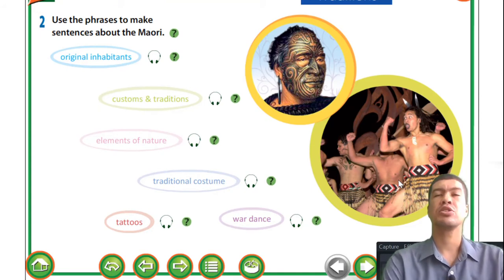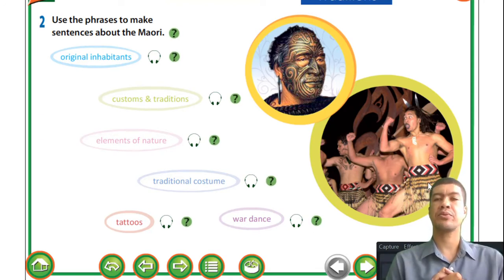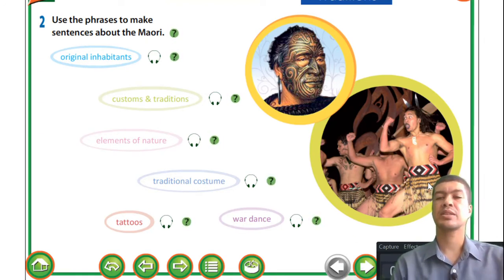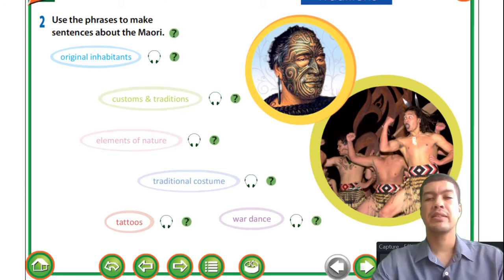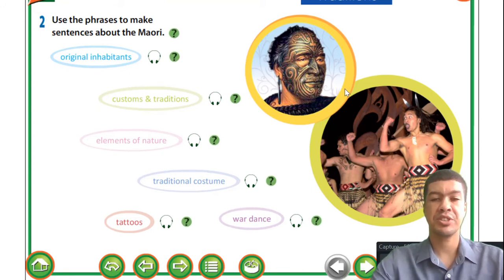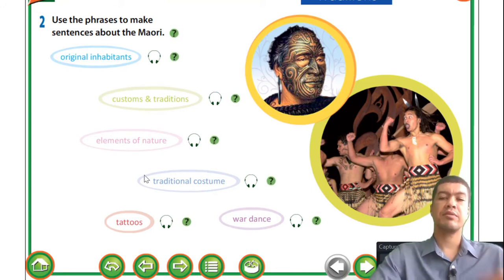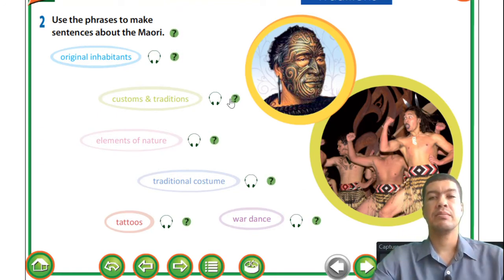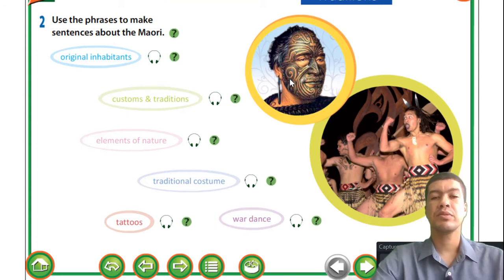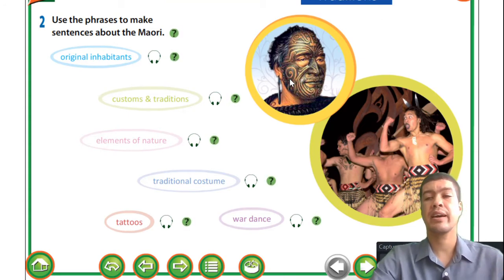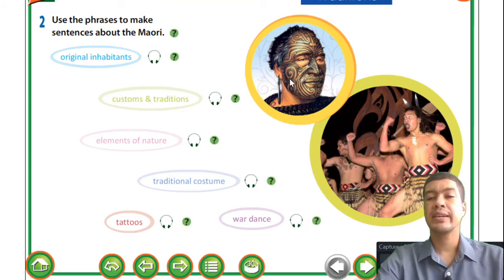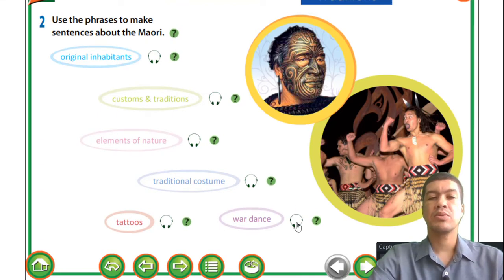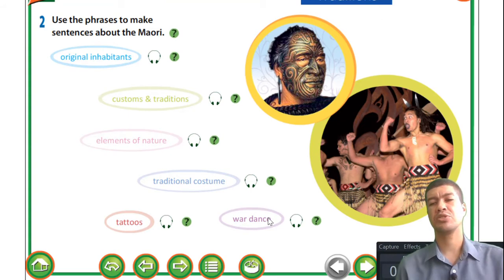The traditional costume doesn't only end there - you'll be familiar with something like a piece of clothing material they put around their waist that looks like a skirt. They feel very comfortable in it because that is their tradition. Alright, tattoos - most of you guys are familiar with tattoos, things written on the skin. These tattoos have meaning for the Maori people. You know that some Vietnamese boys and girls have tattoos on their arms or legs, so you guys are quite familiar with the concept of tattoos.